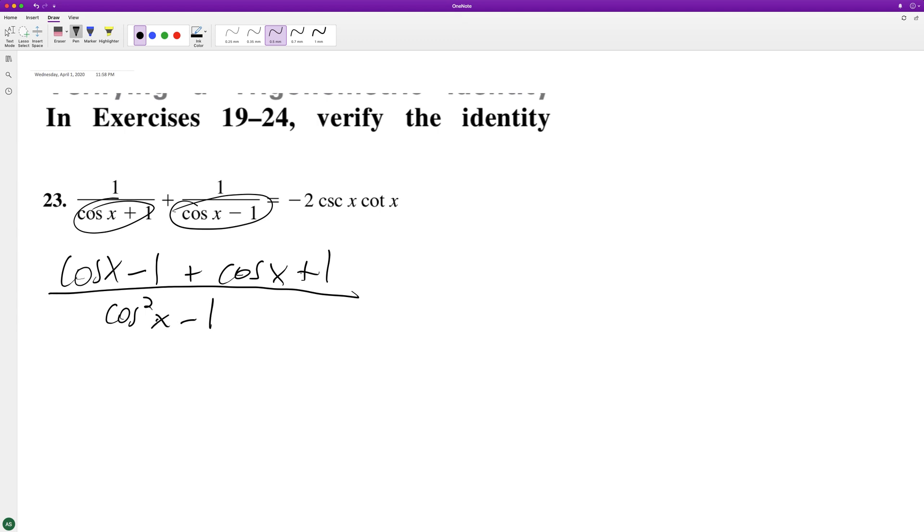So combining like terms, the ones cancel off. We're going to factor out a negative 1. And we get 1 minus cosine squared x. And this can be converted into sine squared x.